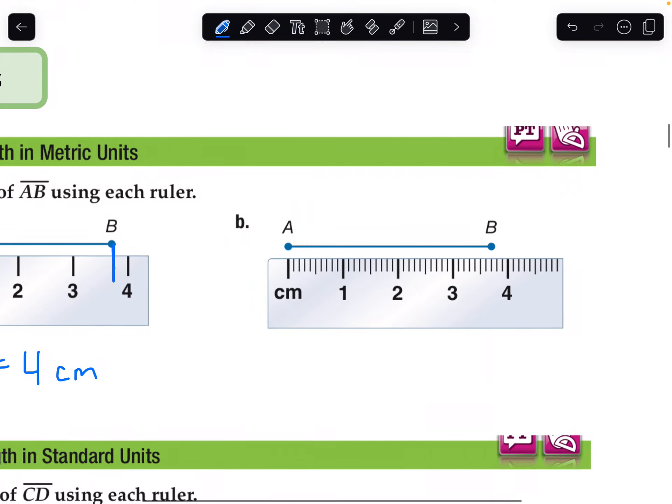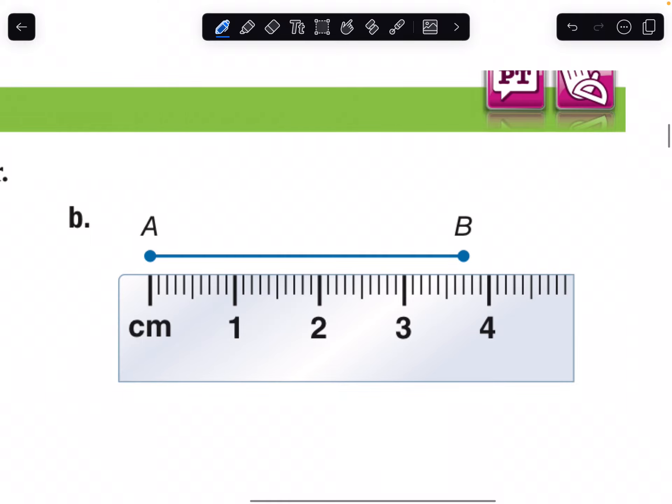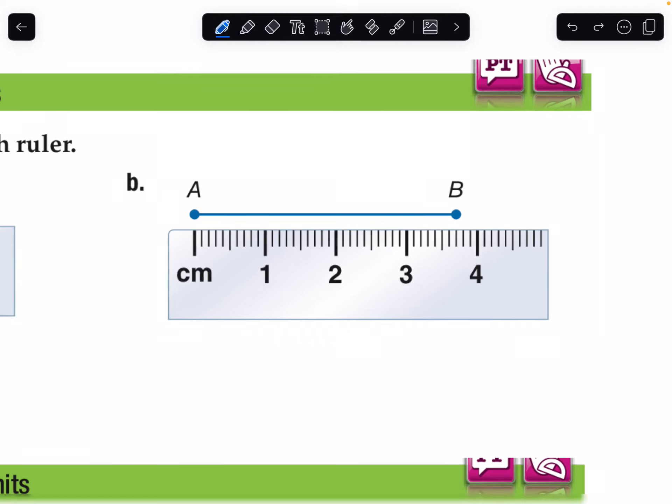On the second one, we actually have the millimeter marks. Let's double check: one, two, three, four, five. Yes, that's 10 ticks between each centimeter. So here we can say that length AB equals 3 point, that's five is halfway, six and seven. So 3.7 centimeters or 37 millimeters.